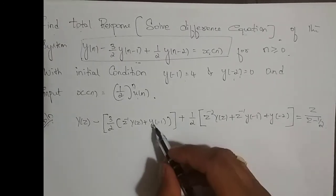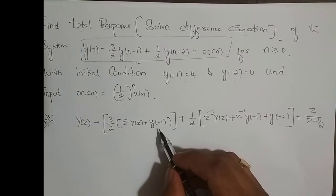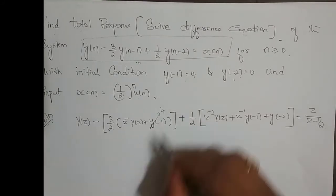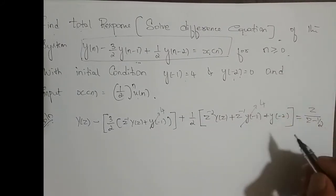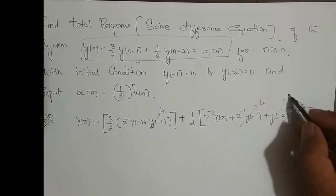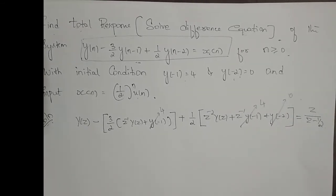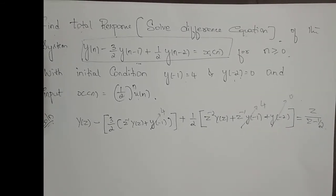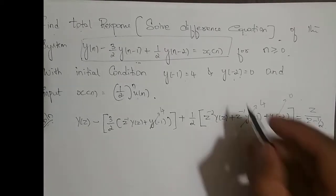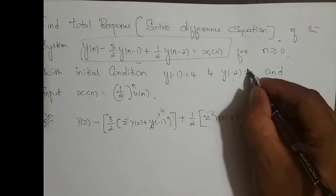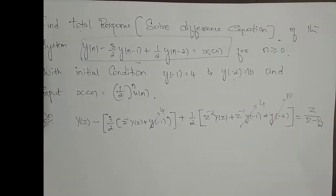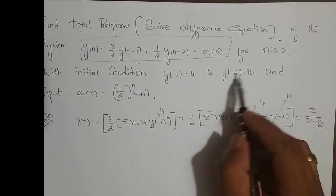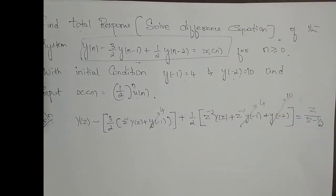Now we will apply the initial conditions. The value of y(-1) is 4, and y(-2) — I am sorry — y(-2) is 10, not 0. So make the change: y(-2) is 10. We will solve this with these corrected initial condition values.